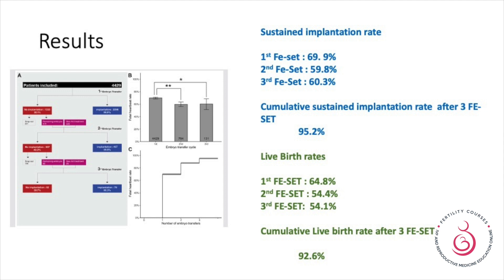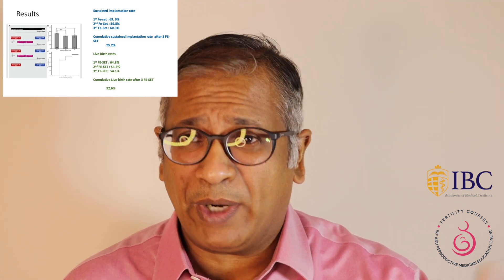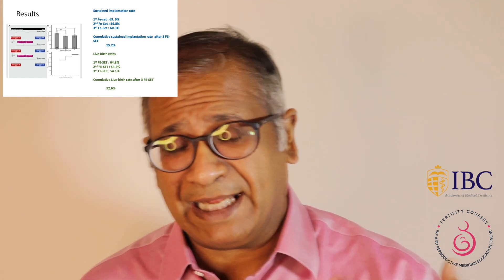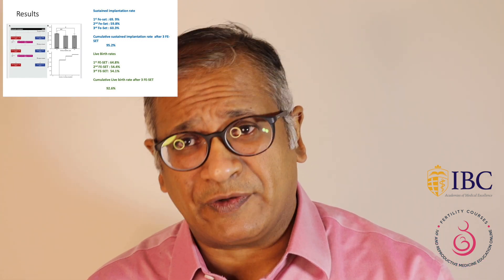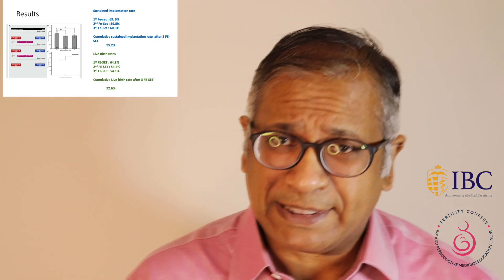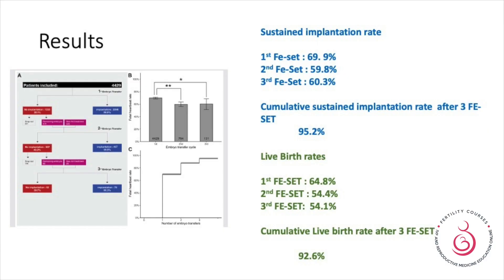Remember that a genetically normal embryo does not give you a 100% chance of pregnancy per cycle — that's very important to tell your patients. It limits the number of transfers by being able to pick the right embryo. The cumulative pregnancy rate was 95.2%. Looking at birth rates: the first frozen embryo replacement cycle gave 64.8%, the second 54.4%, and the third 54.1%. The cumulative live birth rate after three transfers was 92.6%.